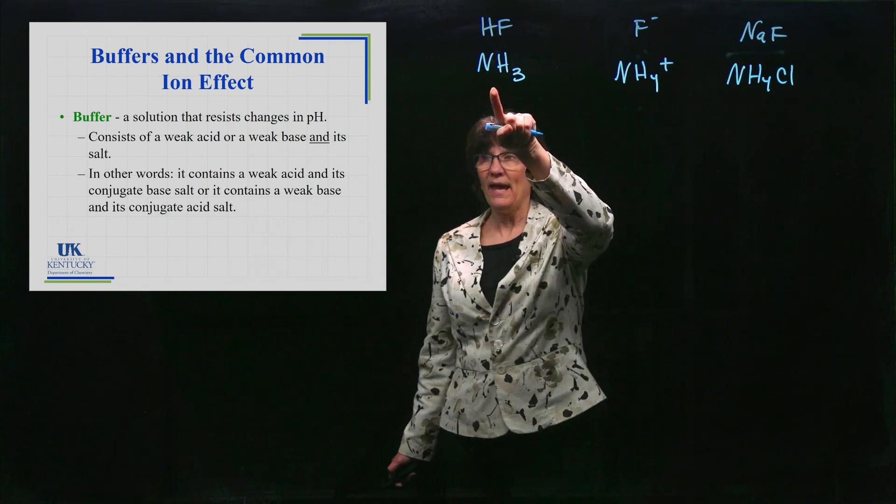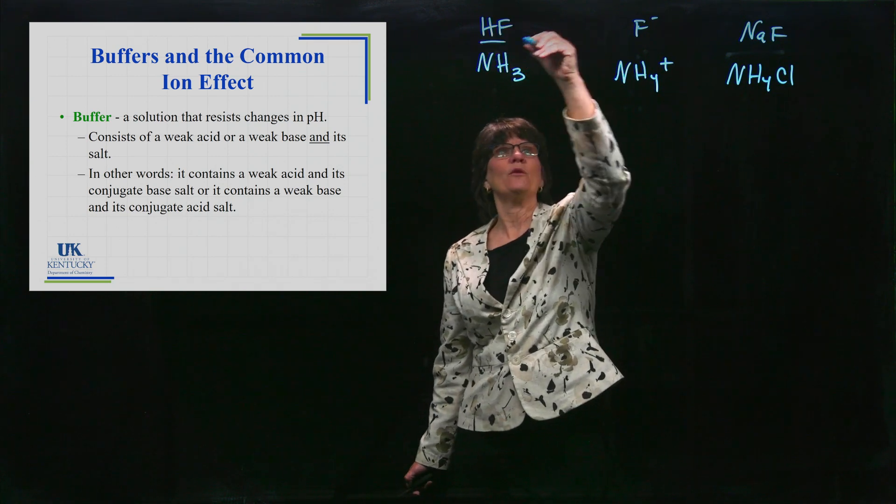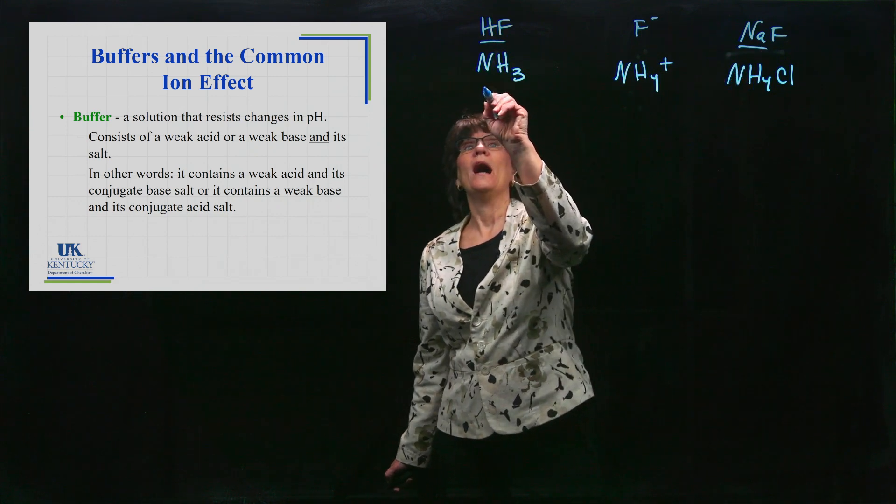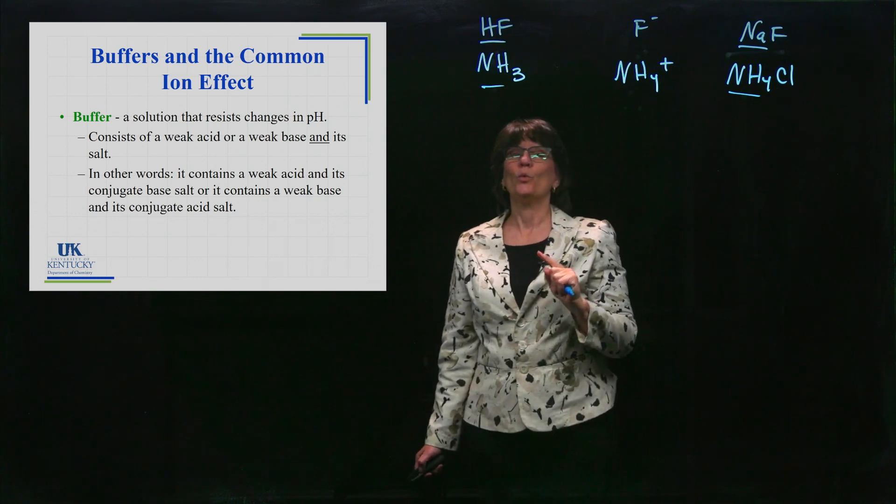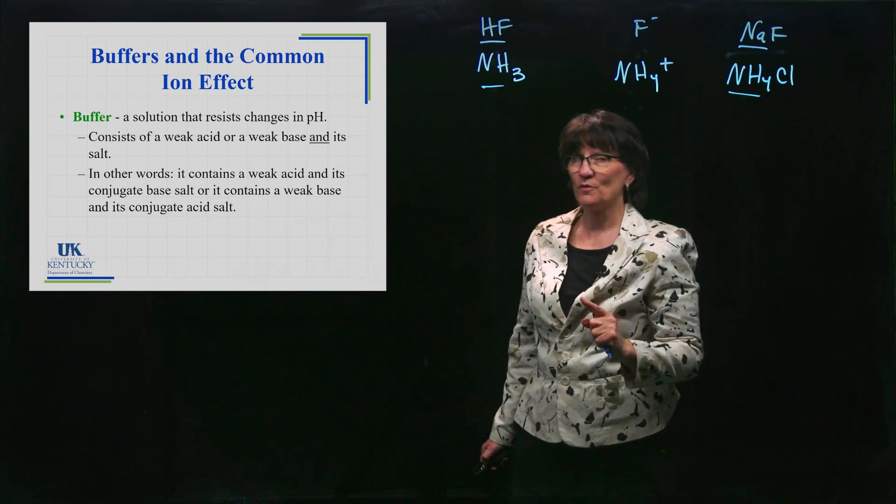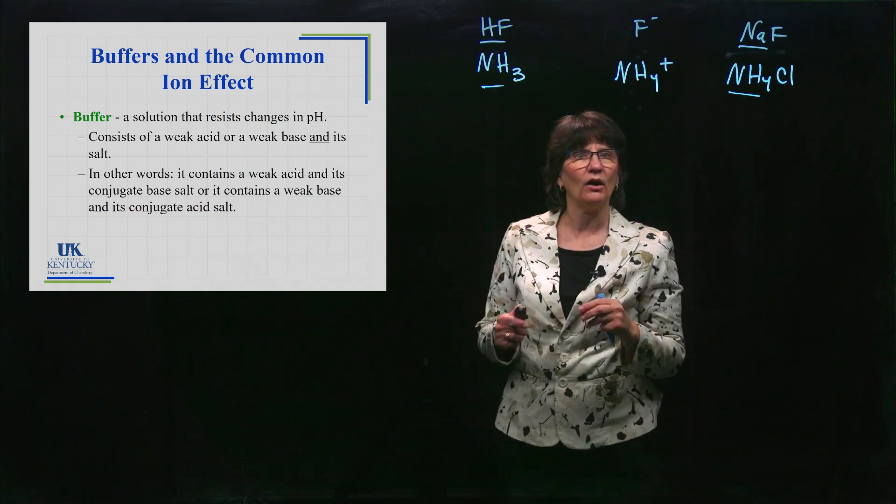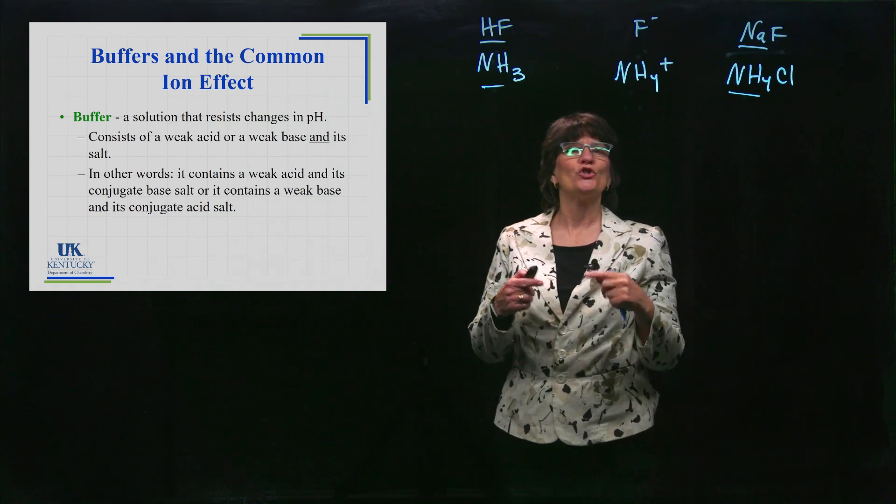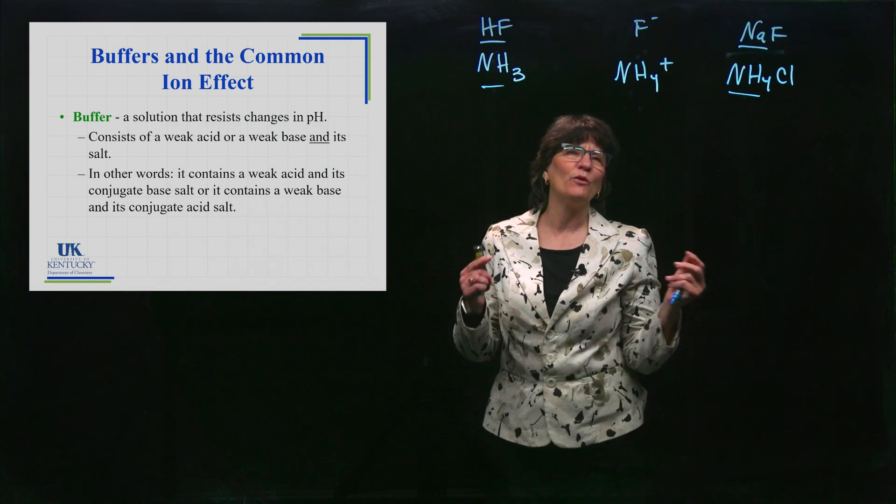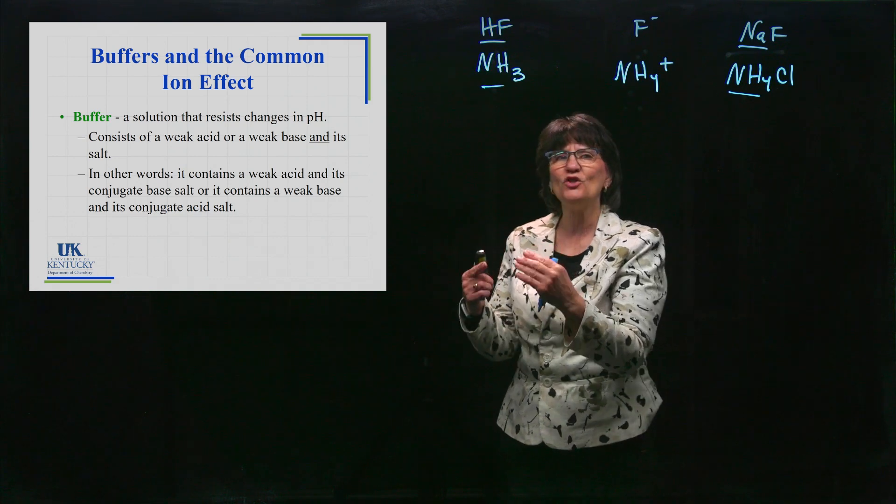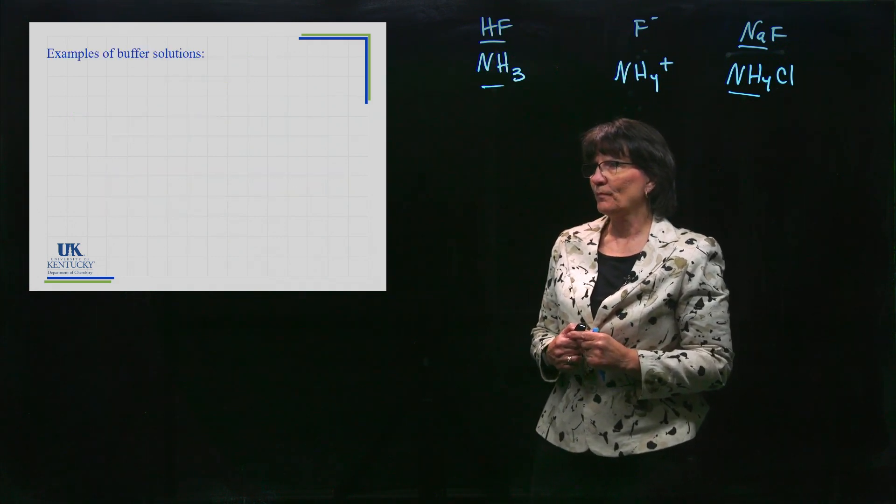A base with its conjugate acid salt - if I mix this together with this, or I mix this together with this, I will have created something that will resist change to pH. We're going to see how it works, what's happening on the molecular level that makes it resist change. We're going to learn to calculate the pH of these solutions and what its pH will be if we add a little acid or a little bit of base.